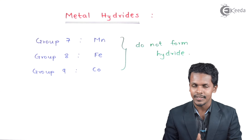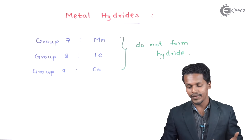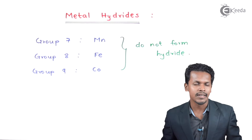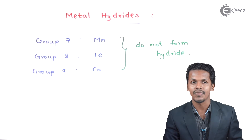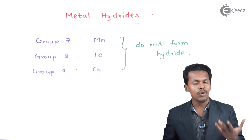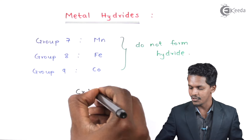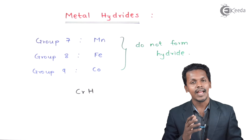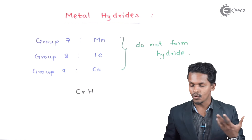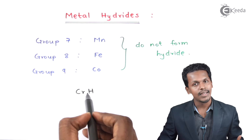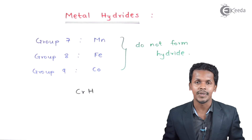Now let us discuss Group 6 again. As mentioned earlier, in Group 6 only chromium forms a hydrate. Chromium has an oxidation number of +2, and as we learned previously, hydrogen in hydrides exhibits a -1 oxidation state. The chromium hydrate has the molecular formula CrH, meaning only one hydrogen is associated with chromium, indicating a +1 oxidation state for chromium in this compound.